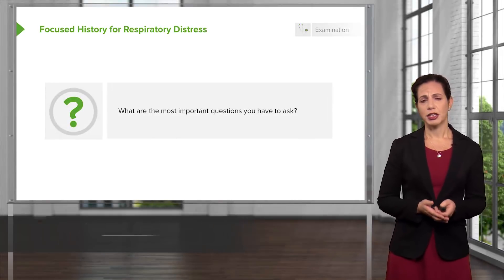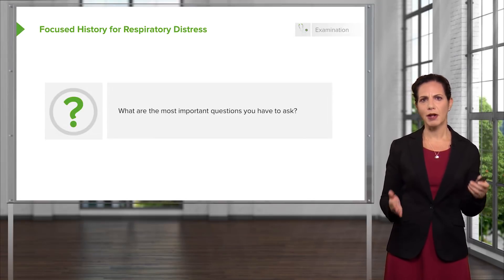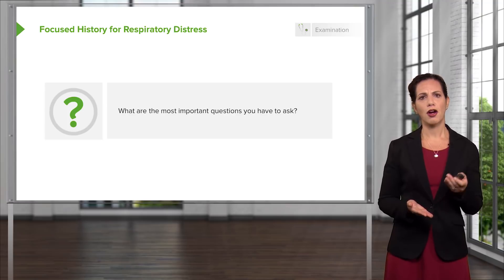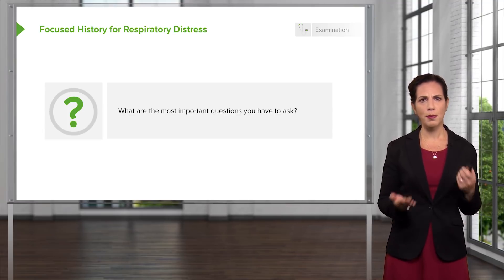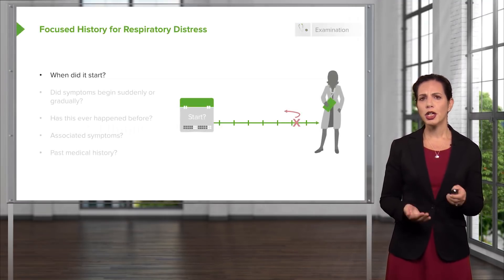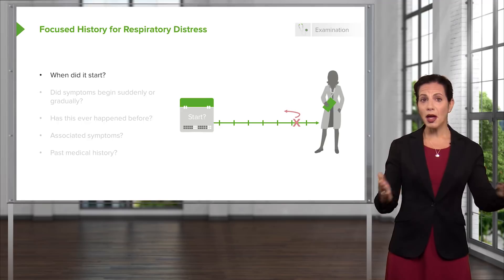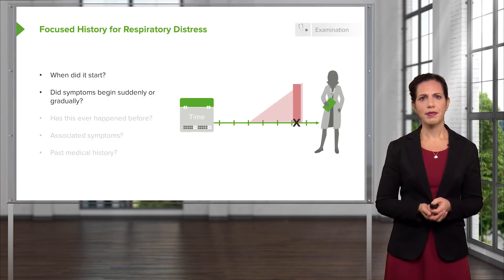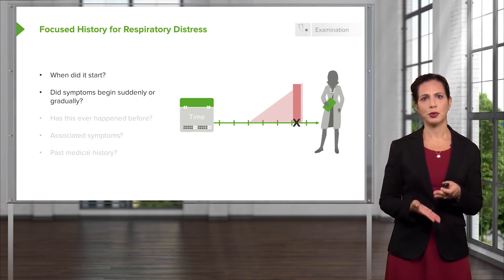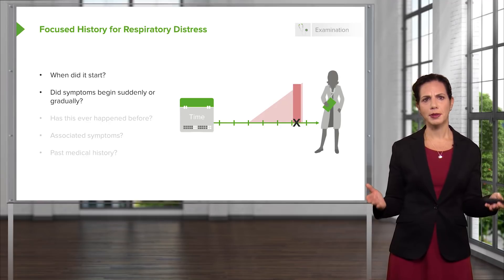When someone comes in with respiratory distress, we need to think about the most important questions to ask, and we have to ask them rapidly. You don't want to take your time — your patient is having a hard time breathing. You want to know when it started: just before they came in, five days ago, or months ago? Is this a chronic problem? Did symptoms begin suddenly or with gradual onset? Sudden onset of shortness of breath points to certain etiologies, while gradual onset suggests others.